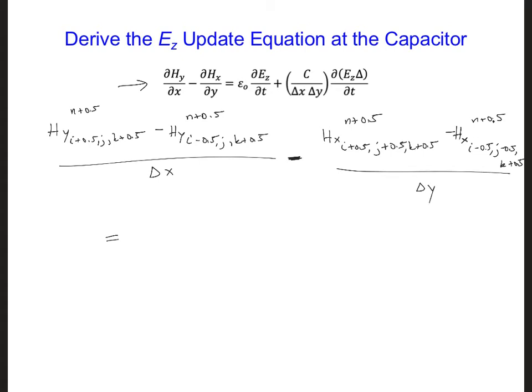Then on the right side, we have epsilon naught Ez n plus 1 at the location of that Ez component, i, j, k plus 0.5, divided by delta t. And for the capacitor, we have C delta z over delta x delta y.